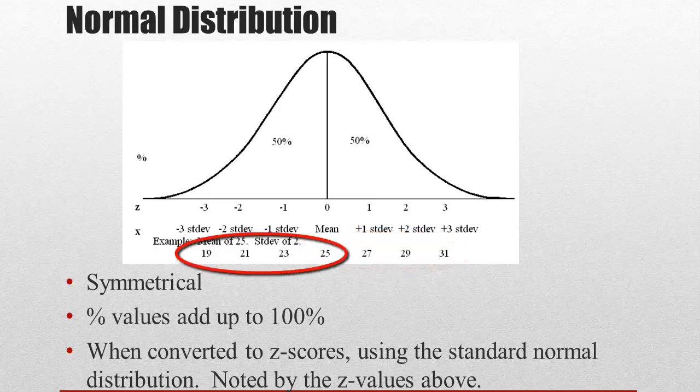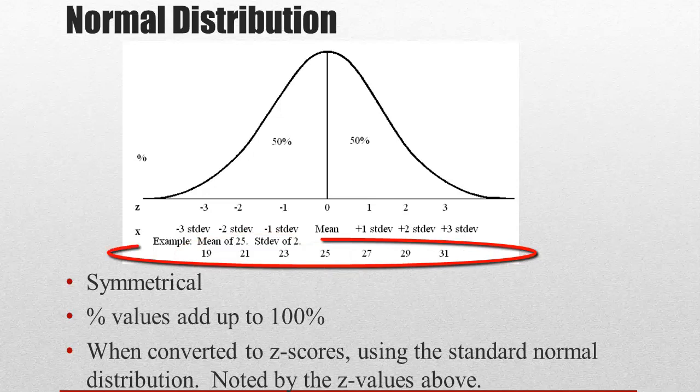Then working your way backwards, starting at 25 down, minus 2 is 23, minus 2 is 21, minus 2 is 19. So if we were to use the normal distribution with our quiz, then we could see that the majority of our students who took this quiz fell between 19 points and 31 points.